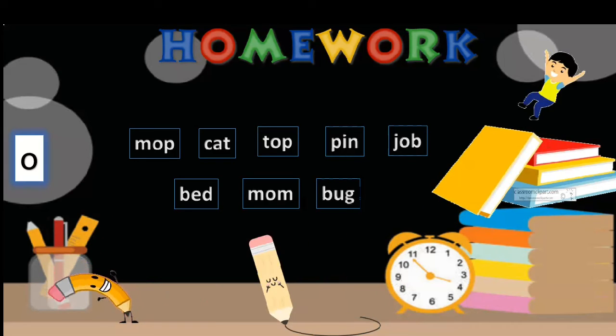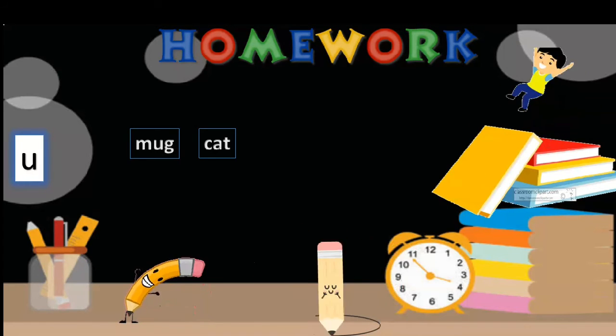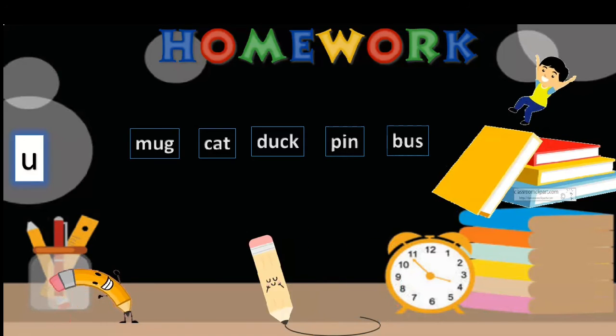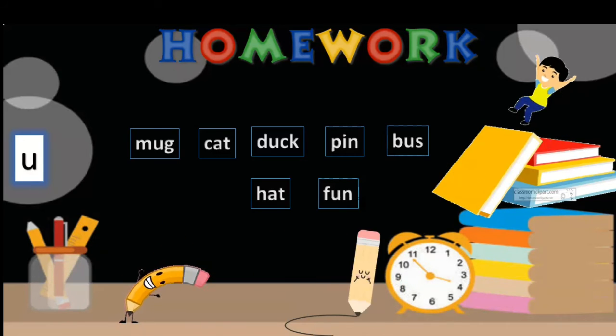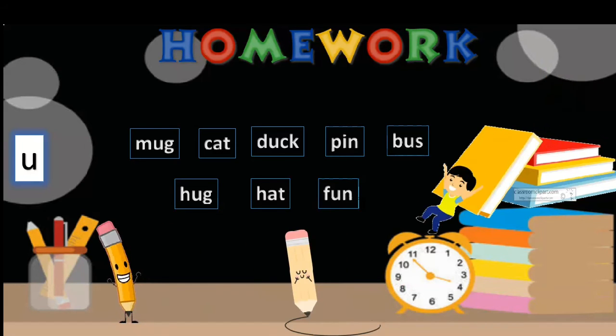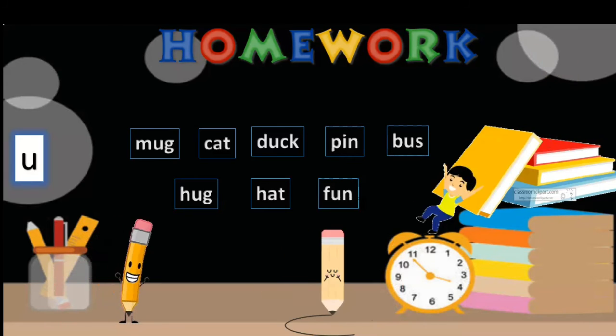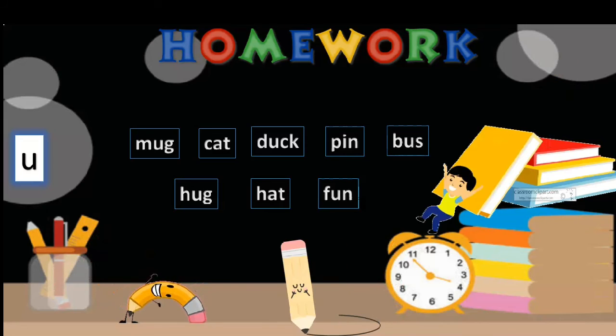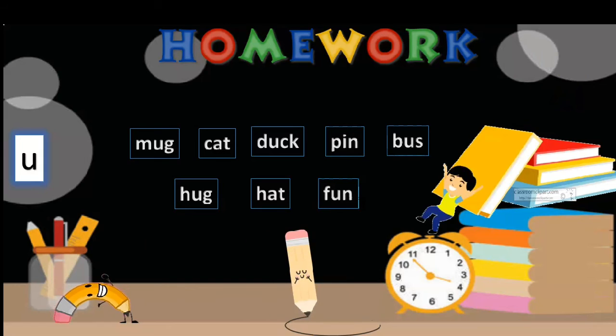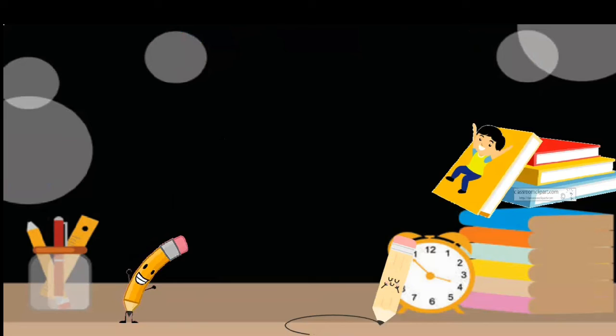We are going to have the next one now, that is U. M-U-G mug, C-A-T cat, D-U-C-K duck, P-I-N pin, B-U-S bus, F-U-N fun, H-A-T hat, H-U-G hug. Now, wherever you see U, that belongs to the U family. So the rest you have to cut as I told you before, and after that you have to write that word which belongs to family of U. The word that belongs to U family you have to write, and what doesn't, you cut and write.